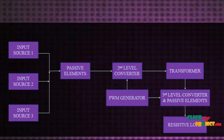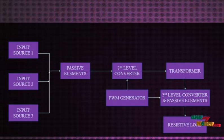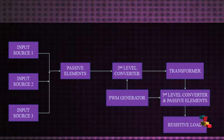Generally, the sources operate across three levels: the input is DC, which is converted into AC in the second level converter, and then that AC supply is converted back into DC in the third level converter.